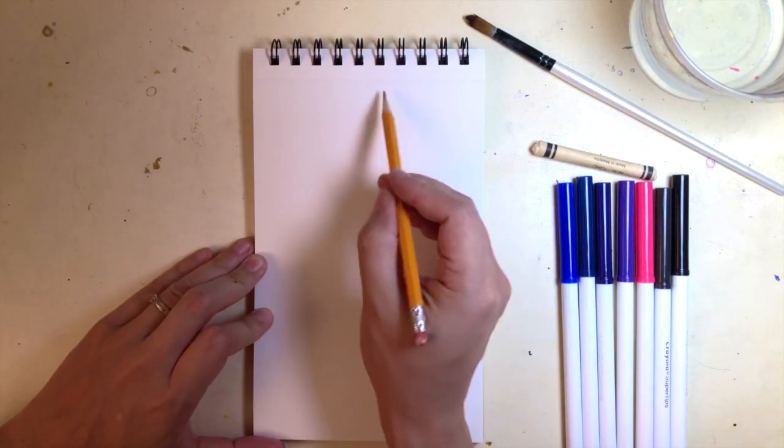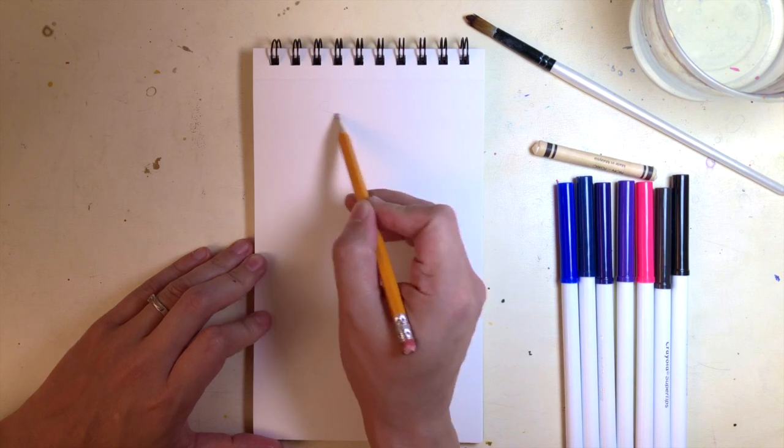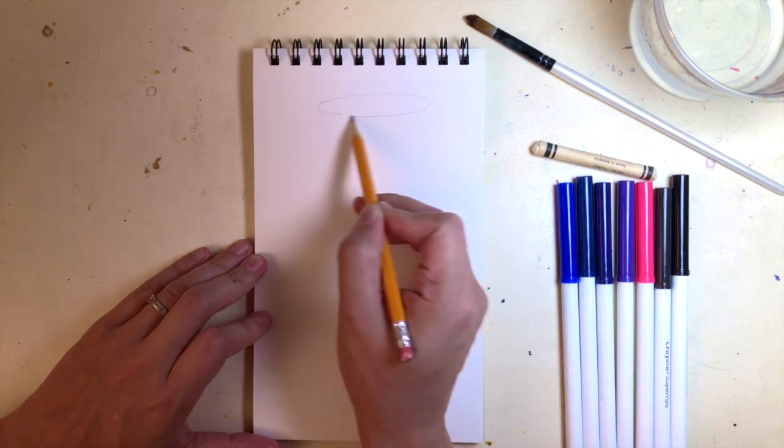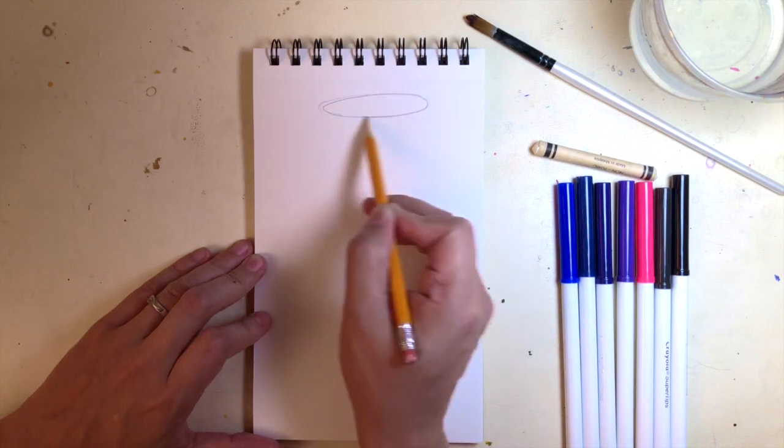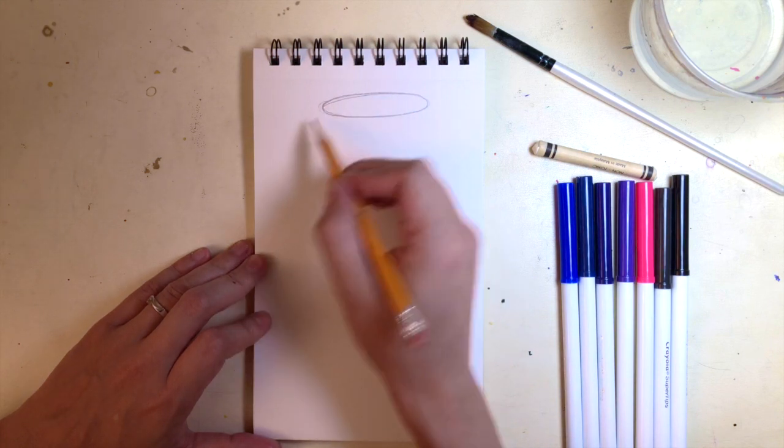I'll make an art today to show you the importance of a background. First, we'll need paper, pencil, markers, a very dark color, and then a white crayon, some water, and a paintbrush.